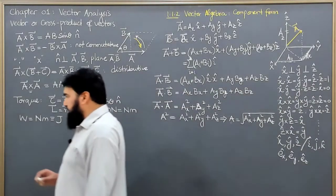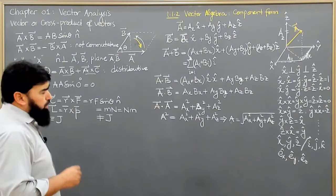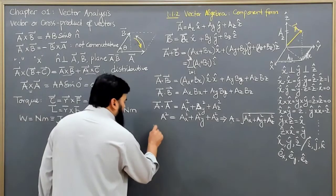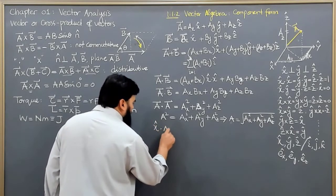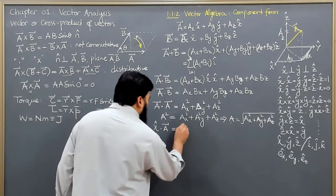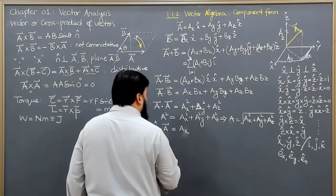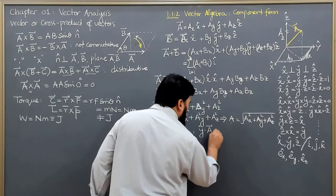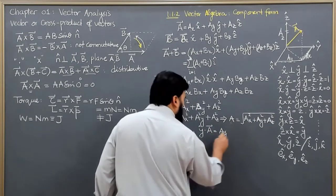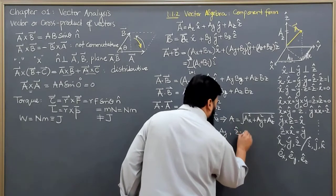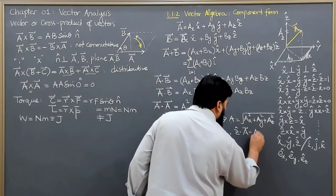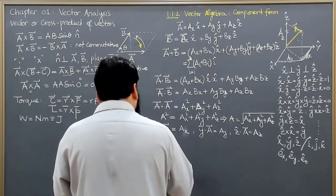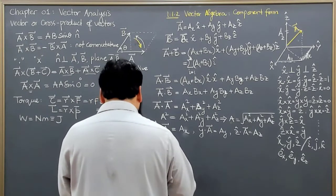If we want to find any component of a vector — for example, the x-component — we compute x̂·A, which gives a_x. Similarly, ŷ·A gives the y-component, and ẑ·A gives the z-component. This is how we extract individual components in component form.